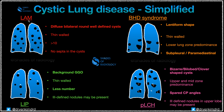The first one is LAM — lymphangiomyomatosis — which is commonly seen in females and is associated with tuberous sclerosis. The cysts in LAM are diffuse, bilateral, and of almost similar size. They are thin-walled, more than 10 in number, and do not contain any septa within them. This is the characteristic feature of LAM.